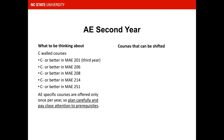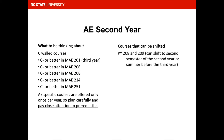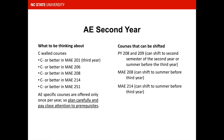Which courses from the second year can be shifted? Physics 208 and 209 can be delayed to the second semester of the sophomore year or even as late as the summer before the third year, before MAE 201. MAE 208 or MAE 214 can be shifted to the summer before the third year if desired; however, it is not recommended to take multiple rigorous courses in a short summer term.